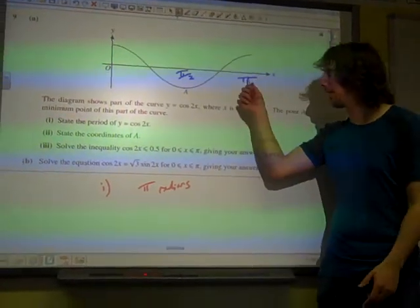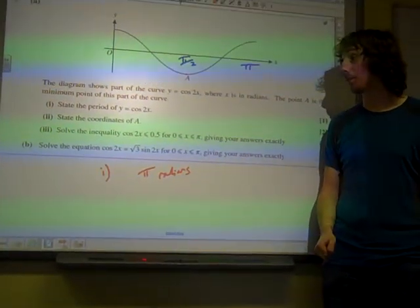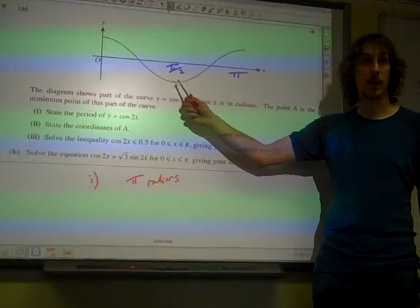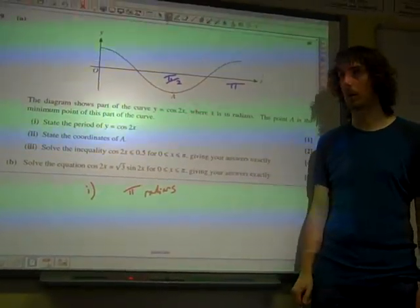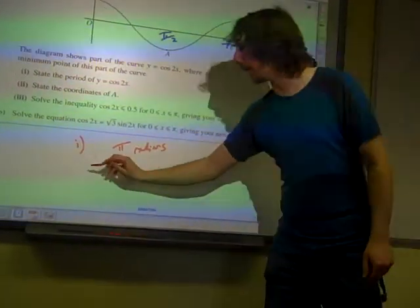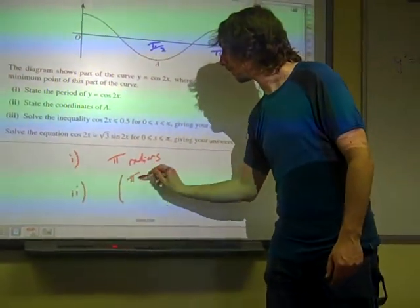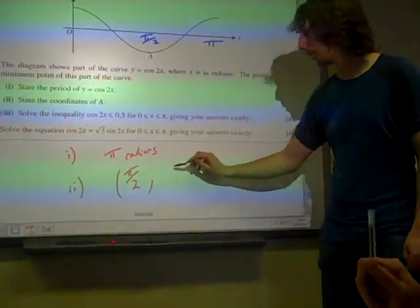And actually, in doing that, in deciding that that was π, we've already got our answer to the next bit, or half the answer, because the x value of A, that's halfway along that one run through, what the graph looks like. So the x value of A is π by 2, and the y value of A is -1.